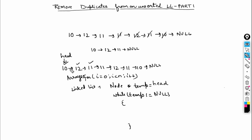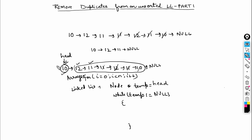When I check element 10 in the entire list and remove it, then check 12, remove it, and similarly for 11. I'm picking an element and iterating over the rest of the list to check if any element's data equals the picked element's data. I need to remove that matching node.